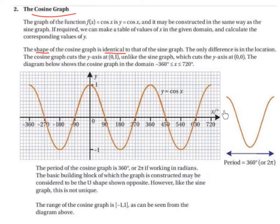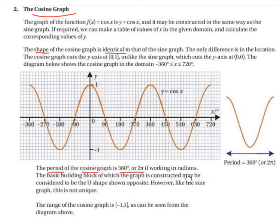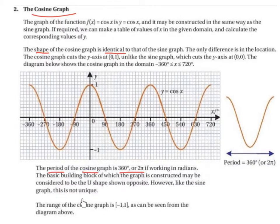So this is the period of the cosine graph, or one of its building blocks. Just like the sine graph, it is 360 degrees or 2pi. The period of the cosine graph is 360 degrees, or 2pi if working in radians. The basic building block of which the graph is constructed may be considered to be the U shape shown opposite. However, like the sine graph, this is not unique. The range of the cosine graph is minus 1 to 1, as can be seen from the diagram. The highest point on the y-axis is 1 and the lowest point is minus 1, so the range for the cosine graph is the same as the range for the sine graph.